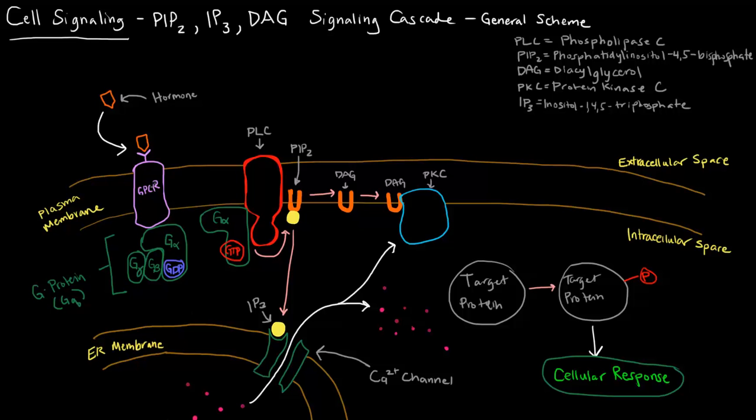We have a hormone binding a G-protein coupled receptor, just like we've been talking about. And that same idea, a conformational change activates this G-protein, causing the alpha subunit to have its GDP replaced with GTP, and then it's activated.